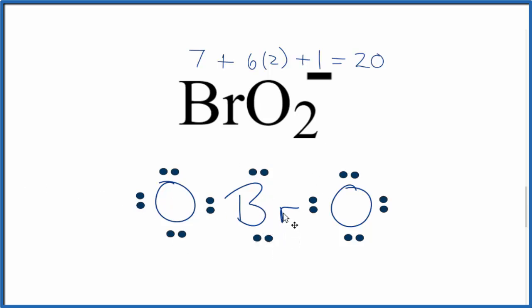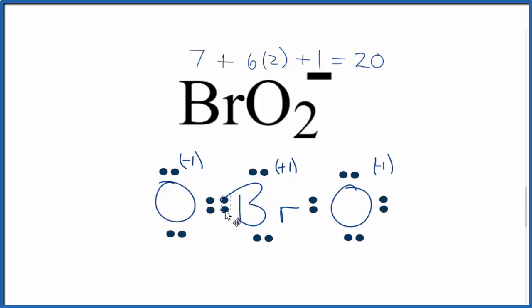It looks like a pretty good Lewis structure. The problem is, if we look at the formal charges, each oxygen will have a formal charge of minus 1, and the bromine in the center will be plus 1. What we'd like is to have these numbers all add up to the 1 minus for the ion. We can do that by moving these electrons between atoms to form a double bond. When we do that, we have formal charges of 0 on the oxygen and the bromine here. This oxygen is negative 1, but that's okay.